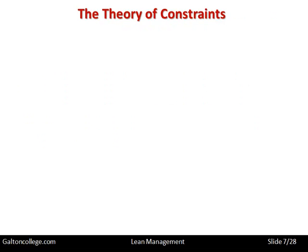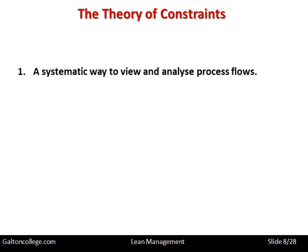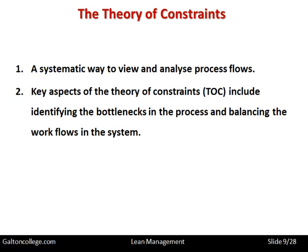There are constraints within systems. Companies don't always have the right amount of facility in all respects, so there will be areas where the company is low on capacity and other areas with plenty of capacity. The theory of constraints is a systematic way to view and analyze process flows. Key aspects include identifying bottlenecks in processes and balancing workflows in the system.